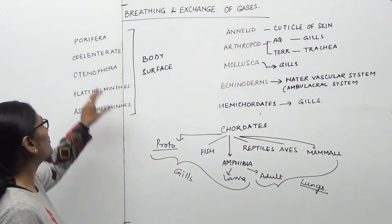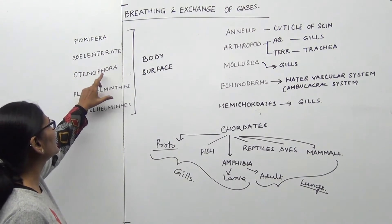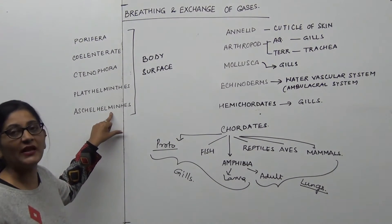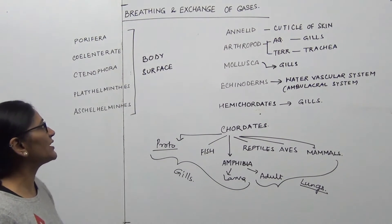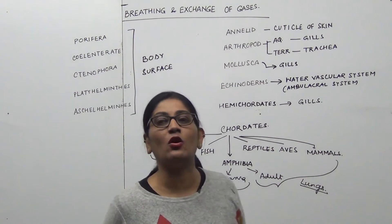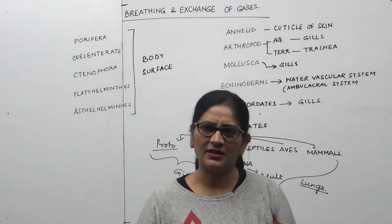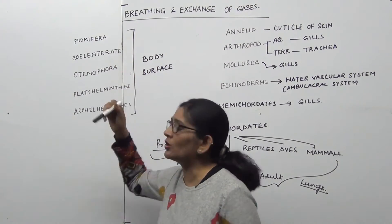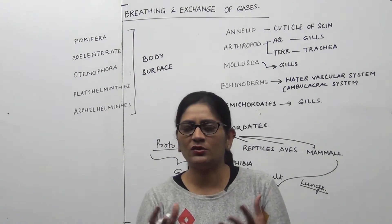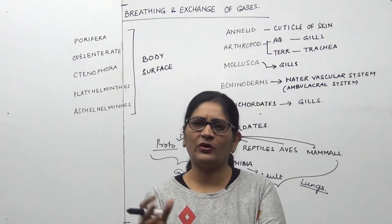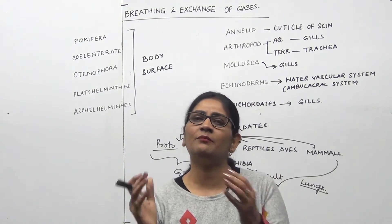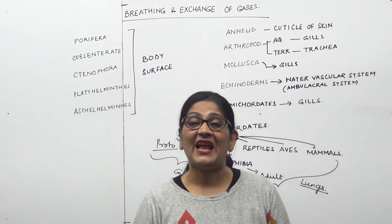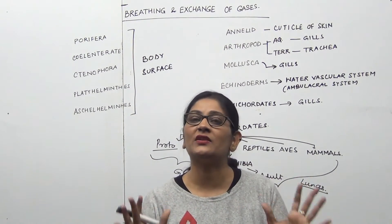Looking at the lower phyla — Porifera, Cnidaria, Ctenophora, Platyhelminthes, and Aschelminthes — there is no fixed or defined respiratory organ. Respiration takes place through the body surface. Why? Because the body is not very complex. It's a simple body, not very complicated, and doesn't require much oxygen. So by diffusion, oxygen absorbed through the body surface reaches each and every cell. There is no need for any specific well-defined respiratory organ.